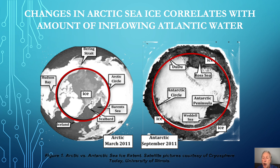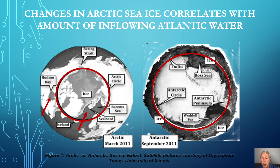In contrast, Arctic sea ice is confined by surrounding continents and stays within the Arctic Circle, also in red. Yet as in Antarctica, winter temperatures are cold enough to form sea ice outside the circles, as seen in the Hudson Bay, which freezes over completely each winter. More importantly, unlike Antarctica, due to the inflows of warm Atlantic water, sea ice is melted deep inside the Arctic Circle, keeping ocean water ice-free during the winter over most of the Barents Sea.